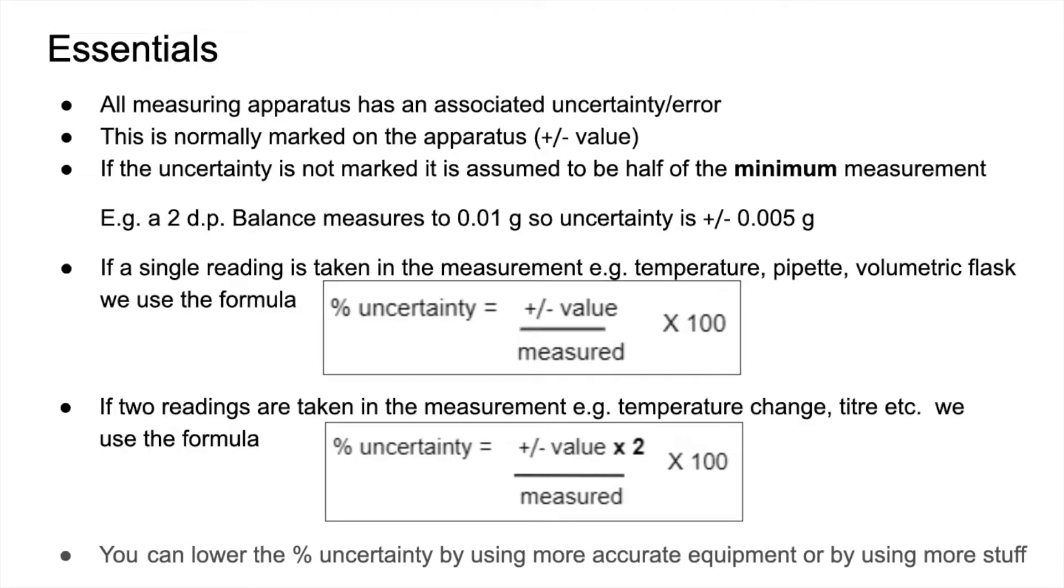And then the final thing here, you can lower the percentage uncertainty by using more accurate equipment. So you're essentially lowering this numerator value in the formula, or you can use more stuff. So the measured value goes up, the denominator in the fraction goes up and obviously lowers the percentage uncertainty.